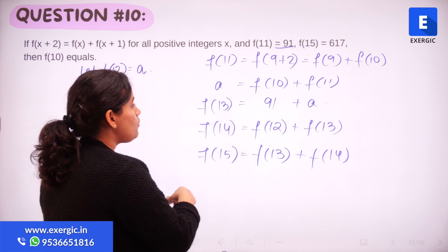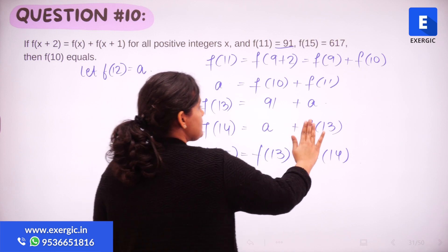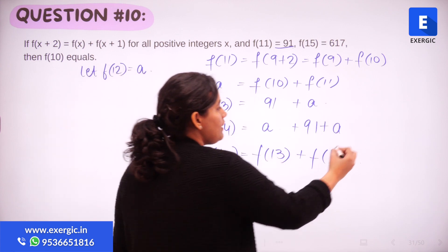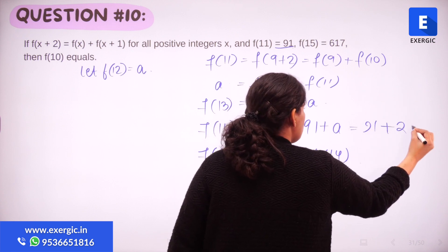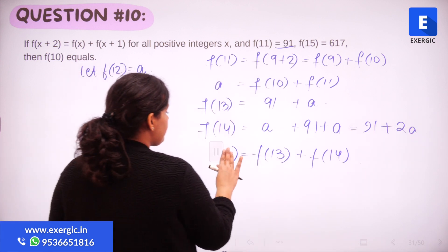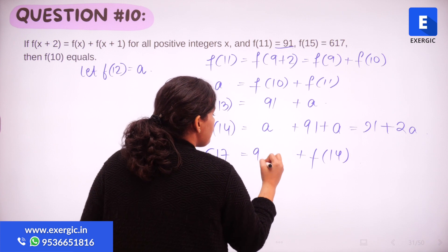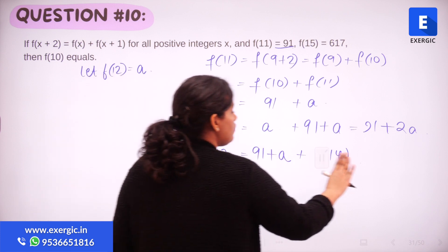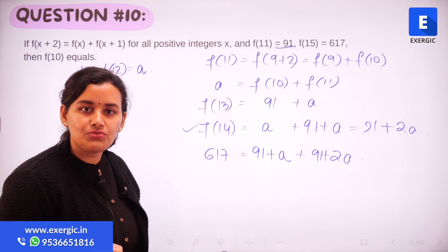If I look at f(14), what is f(14)? It's f(12) again. I know f(12) is a and I know f(13) is 91 plus a. So f(14) is nothing but 91 plus 2a. Now looking at f(15), f(15) we know is 617. f(13) we just found out is 91 plus a, and f(14) we just found out is 91 plus 2a.